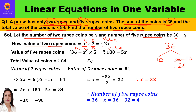The number of 5-rupee coins is (36 minus x), multiplied by 5. So 5 times 36 is 180, and 5 times minus x is minus 5x, giving us 180 minus 5x as the value of 5-rupee coins. Now the total value of the coins is given as 84, which comprises the value of 2-rupee coins and the value of 5-rupee coins.